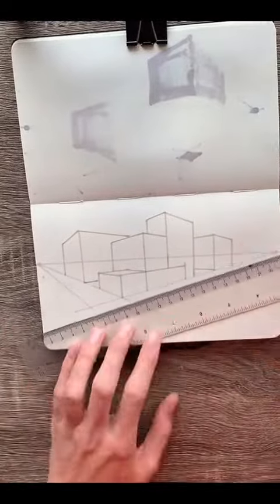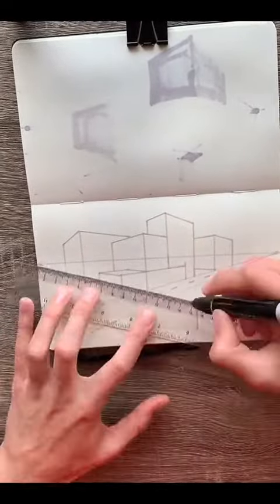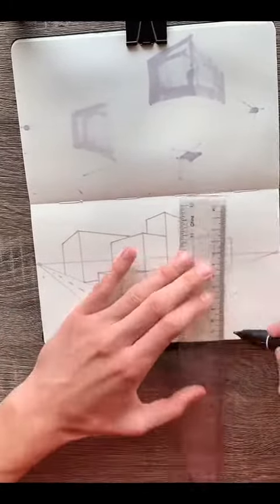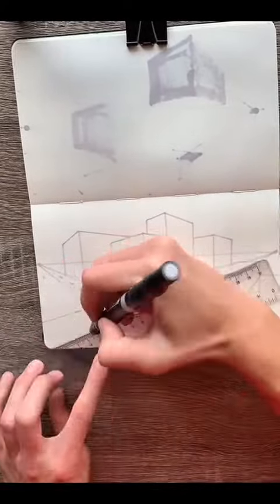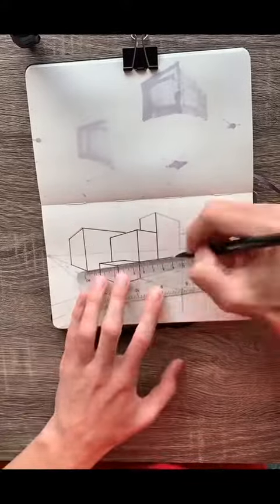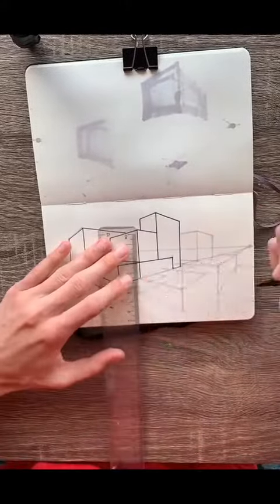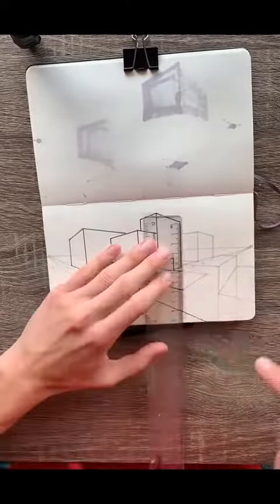Now, this is definitely something that takes practice, and it doesn't come to us easily because our brains know that buildings are built with right angles, but because of our perspective, these angles are distorted. So just make sure you keep practicing. Use references when you can, and as you get used to it, it will get easier and you'll just be able to eyeball it eventually.